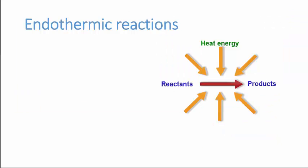Let's think about endothermic reactions. Endothermic reactions, as we move from reactants to products, absorb heat from the surroundings into the system. The temperature of the surroundings decreases as energy leaves the surroundings and enters the system. In an endothermic reaction, energy is absorbed and it's used to break bonds or it's changed to stored potential energy in the products. A very common misunderstanding is that an endothermic reaction will get hotter as the reaction continues — the exact opposite is true.